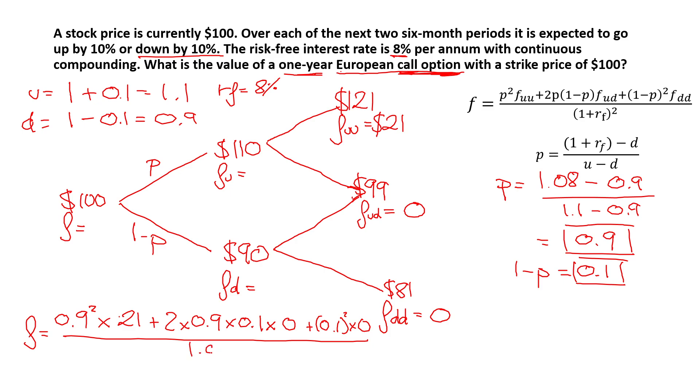Now remember, anything times 0 is 0, so we can get rid of this part and this part. And we are left with F being 0.9 squared times 21 over 1.8 squared. Let's see what we'll get when we plug this into the calculator.